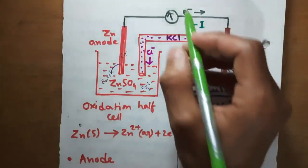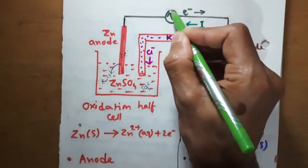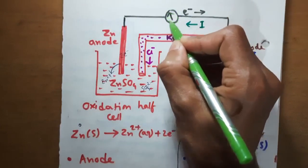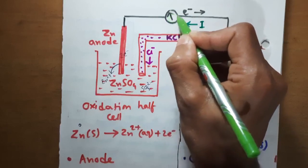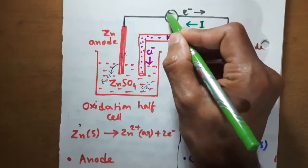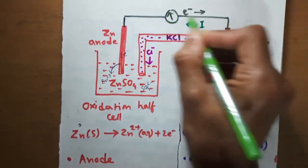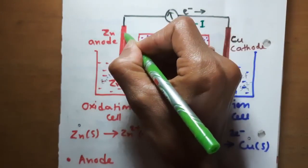If we use a galvanometer, we can detect the current flowing from the copper electrode to the zinc electrode in the external circuit.